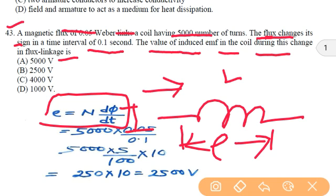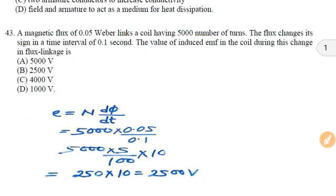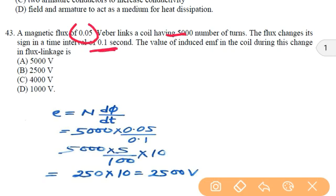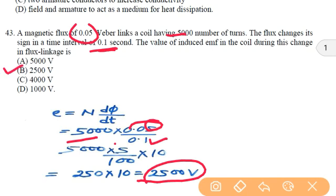So in this question, we have number of turns as 5000 and dphi as 0.05 and the time is 0.1 second. So putting these values, that is 5000 into dphi as 0.05 and time is 0.1 second. So by calculating it, we will get that EMF is 2500 volt, so option B will be the correct answer.